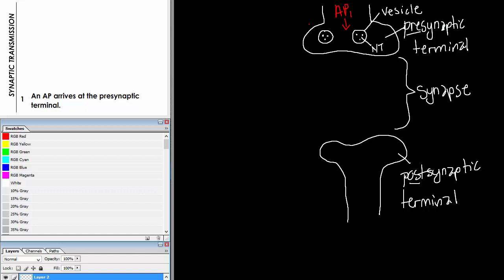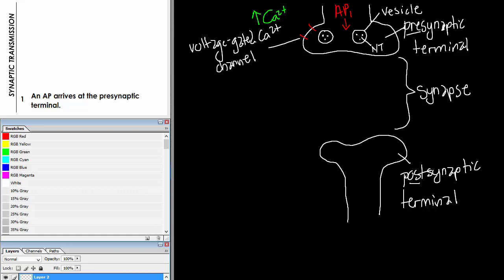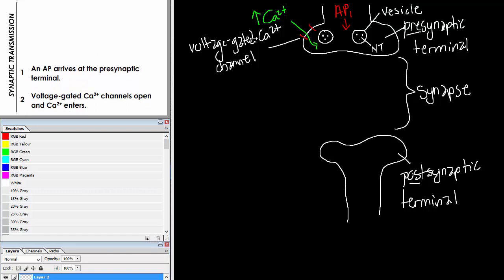In the pre-synaptic terminal membrane there are channels which allow calcium to enter. Calcium is in high concentration outside the neuron. These channels are called voltage-gated calcium channels, and when the action potential arrives — because it's a change of voltage — it opens these channels and allows calcium to enter the pre-synaptic terminal. Step two: once the action potential arrives, voltage-gated calcium channels open and calcium enters.